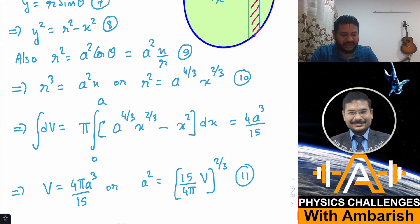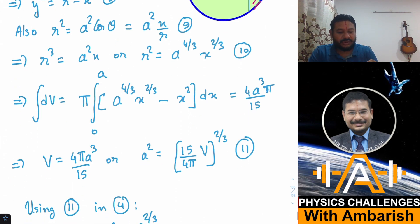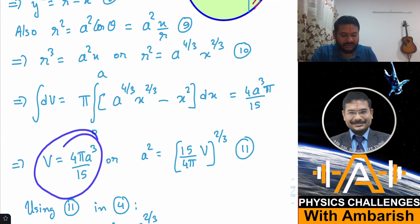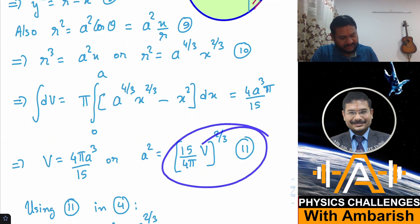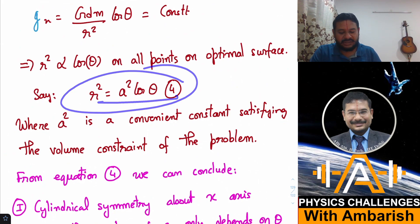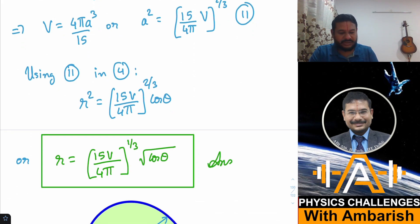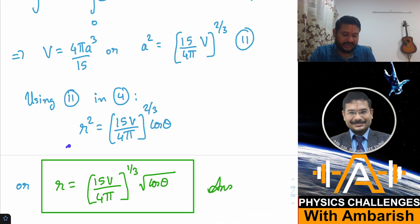At θ = 0, x = a (the farthest point on the surface), so we integrate from 0 to a. Substituting y² = a^(4/3)·x^(2/3) − x² and integrating π·y²·dx from 0 to a gives the total volume V = 4πa³/15. Rearranging for a², we substitute back into equation r² = a²cosθ to obtain the complete polar equation of the optimal surface.